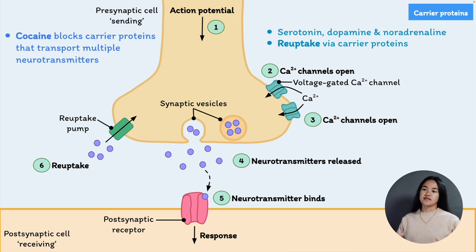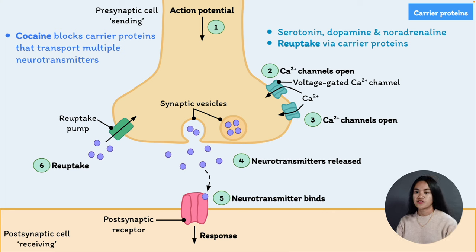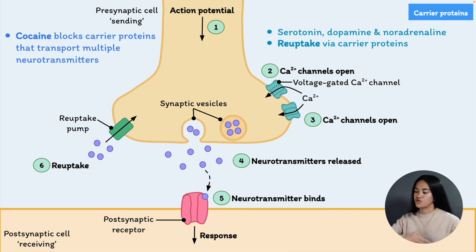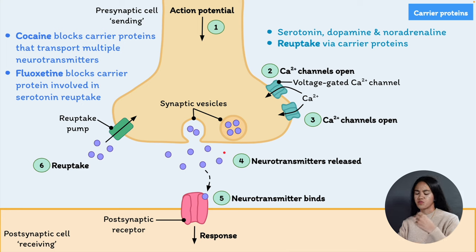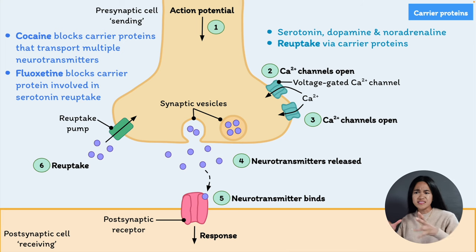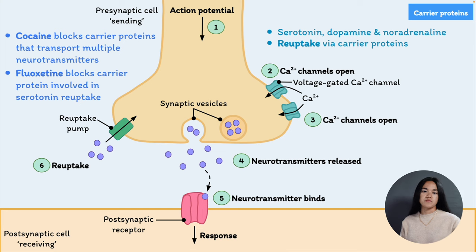Let's go through two examples: cocaine and fluoxetine. Cocaine blocks the carrier proteins responsible for the reuptake of neurotransmitters such as dopamine and norepinephrine, so it has a stimulatory effect — these transmitters stay in the synapse for longer causing euphoria and other effects, resulting in a buildup of these neurotransmitters in the synapse. Fluoxetine, on the other hand, is more selective — it blocks the carrier protein responsible for the reuptake of serotonin, making it a selective serotonin reuptake inhibitor (SSRI). SSRIs block the reuptake of serotonin and increase its availability, and are one of the most commonly used drugs in the treatment of depression.